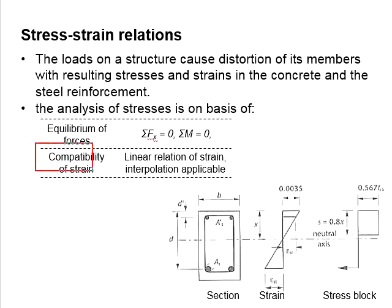As for the compatibility of strain, it normally assumes a linear relationship of the strain throughout the cross-section. And for that, interpolation is applicable to determine the strain at different positions of the cross-section. This lays the foundation for the analysis of the stress developed in the member for the design of reinforced concrete members.